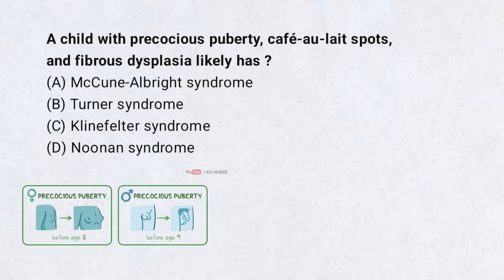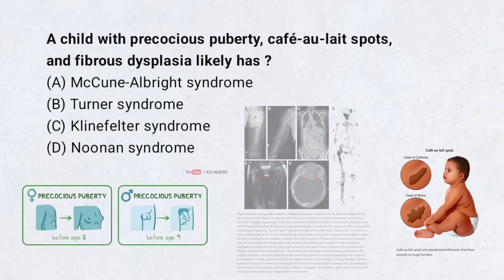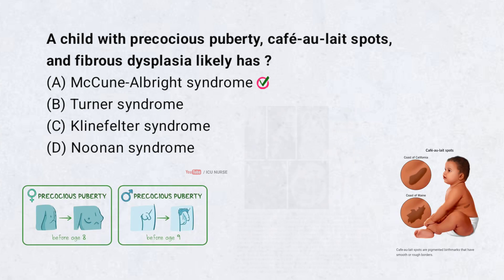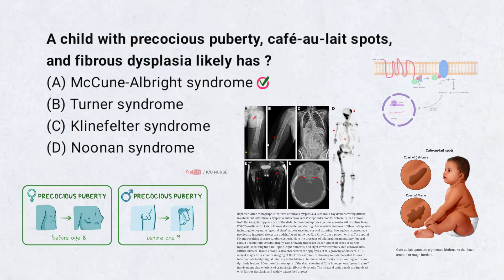A child with precocious puberty, café-au-lait spots, and fibrous dysplasia likely has: A. McCune-Albright syndrome, B. Turner syndrome, C. Klinefelter syndrome, D. Noonan syndrome. Correct answer: A. McCune-Albright syndrome. McCune-Albright syndrome is characterized by the triad of café-au-lait spots, early puberty, and bone lesions. This syndrome is due to a GNAS gene mutation.